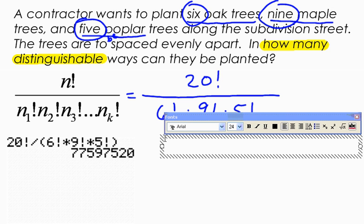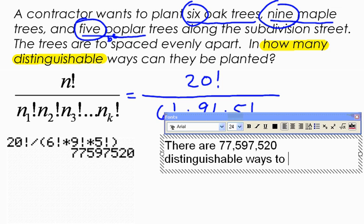So let's type our answer out in a complete sentence. There are 77,597,520 distinguishable ways to plant the trees.